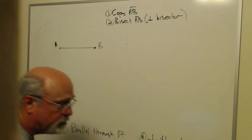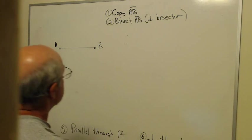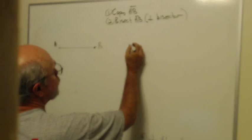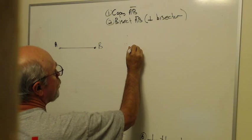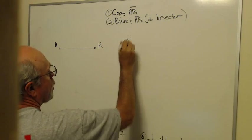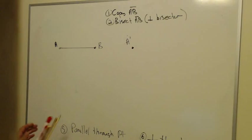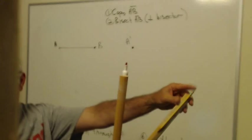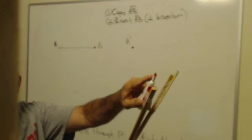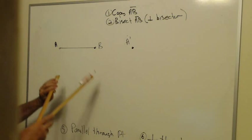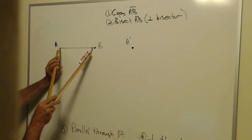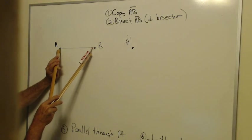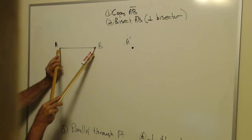This one is real simple. First thing I'm going to do is put an endpoint here for my new segment. We'll call it A prime. I'm going to take my compass with the point end and the pen end. I'm going to put the point end on A and stretch the pen end until it's right on B.